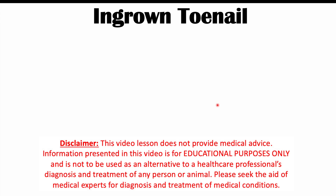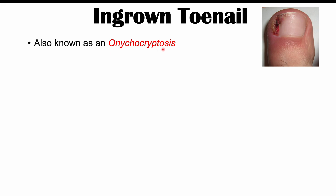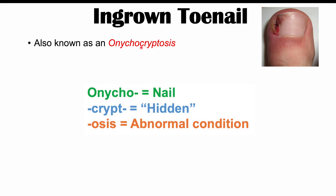Hi everyone, this lesson is on ingrown toenails. Ingrown toenails are also known as onychocryptosis. If we look at this word: onycho refers to nails, crypt refers to hidden, and osis is an abnormal condition. So this word actually means an abnormal condition of a hidden nail.